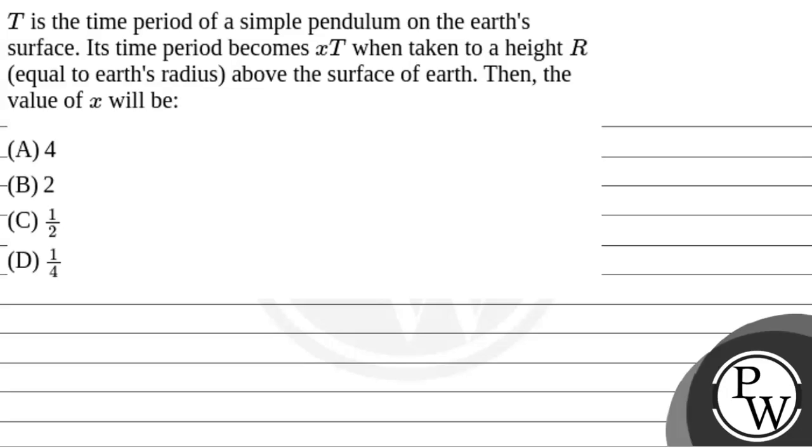Hello, Baccio. Let's read the question. The question says that T is the time period of a simple pendulum on the Earth's surface. Its time period becomes X into T when taken to a height R equal to Earth's radius above the surface of Earth. Then the value of X will be?